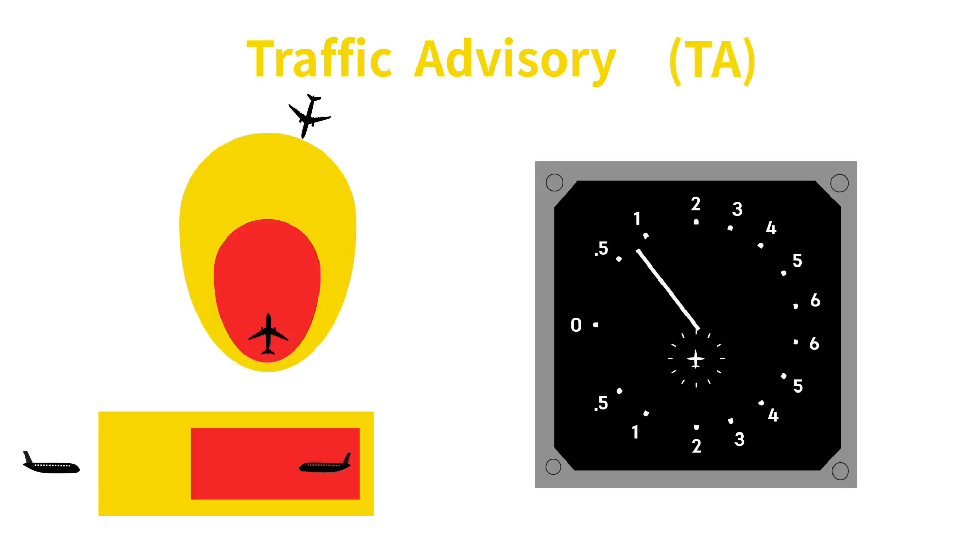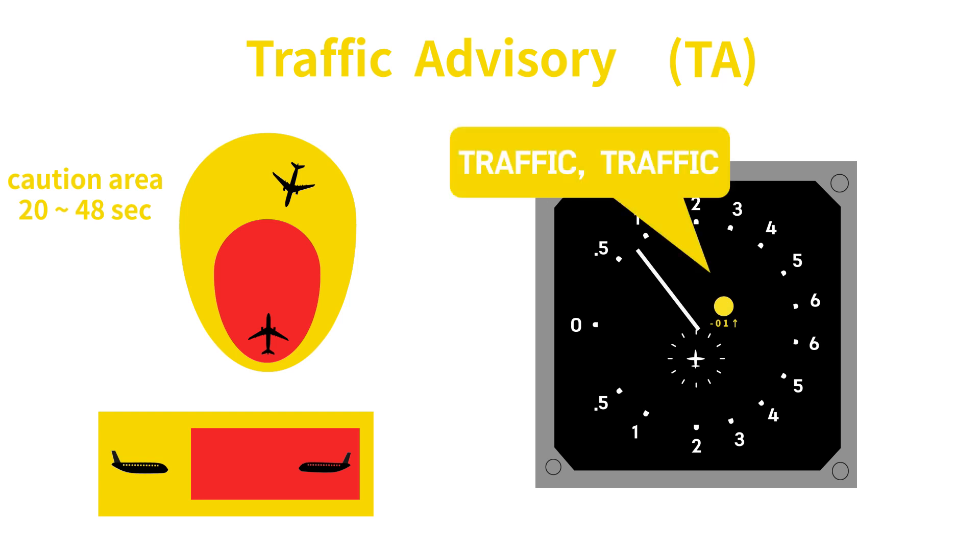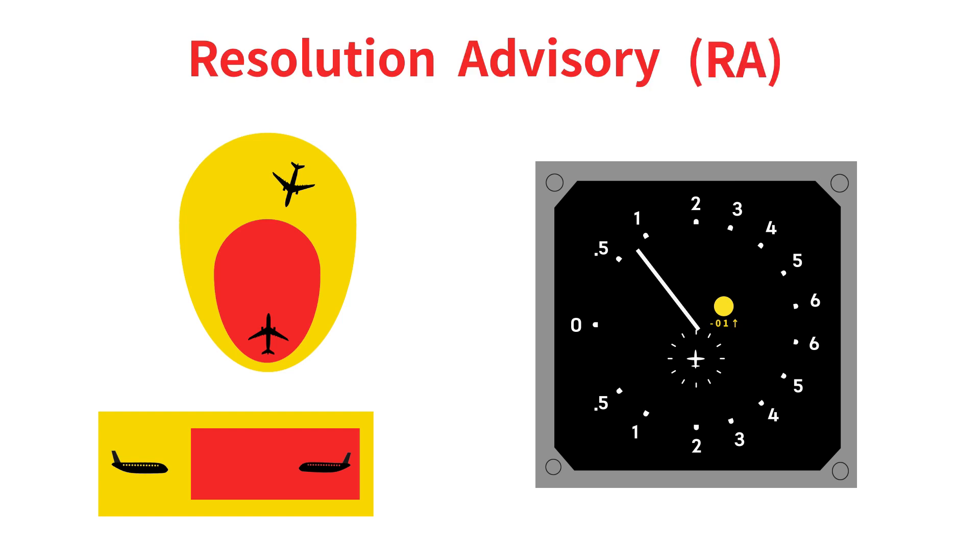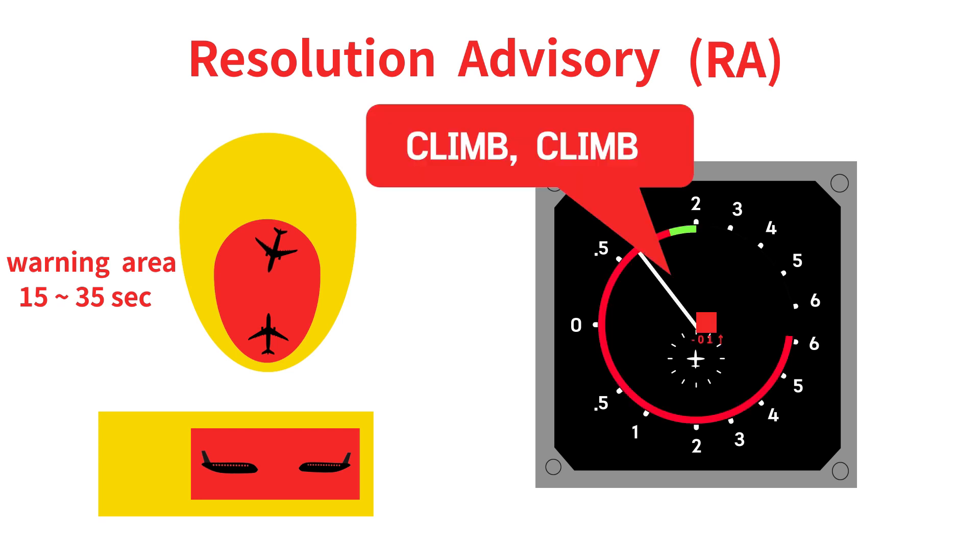A traffic advisory is called TA, and when the intruder aircraft enters the expected collision area about 20-48 seconds before, the symbol of the intruder aircraft is changed to amber on the cockpit display, and a voice alarm of traffic, traffic sounds. The resolution advisory is called RA, and it is an alarm that occurs when intruder aircraft enter the expected collision area about 15-35 seconds before. The intruder aircraft symbol turns red, and voice alerts such as climb, climb, and descend, descend, are activated for avoidance maneuvers.